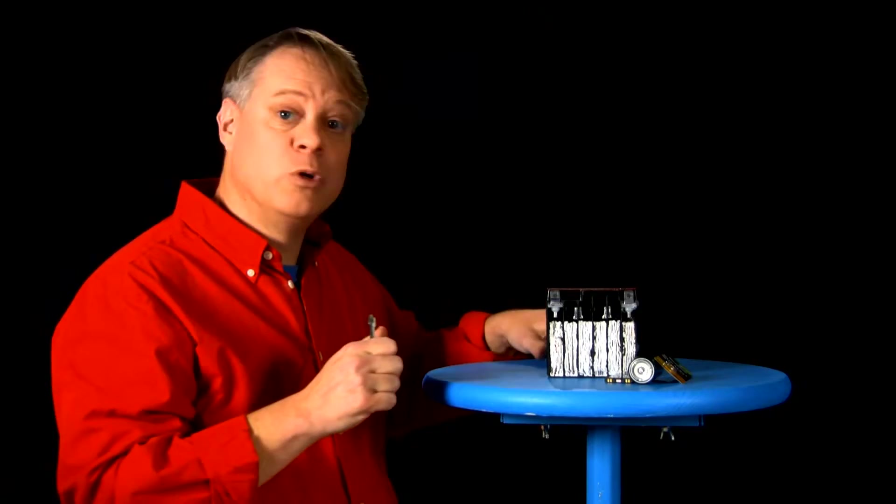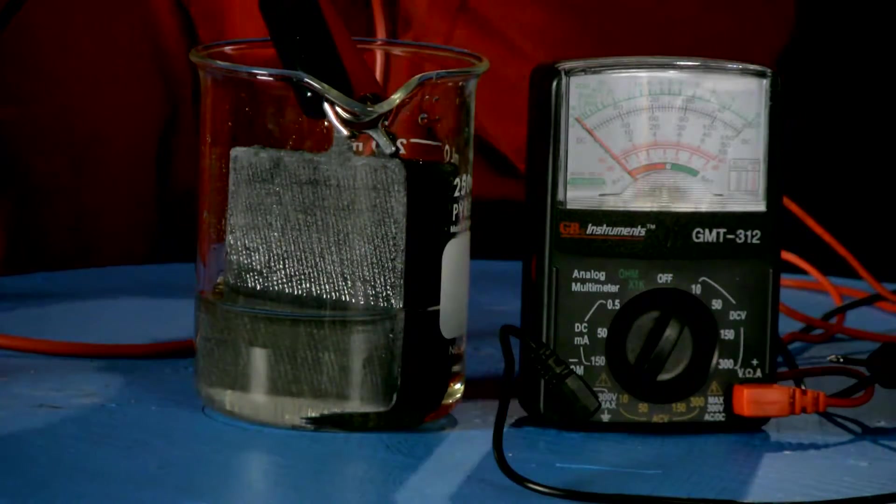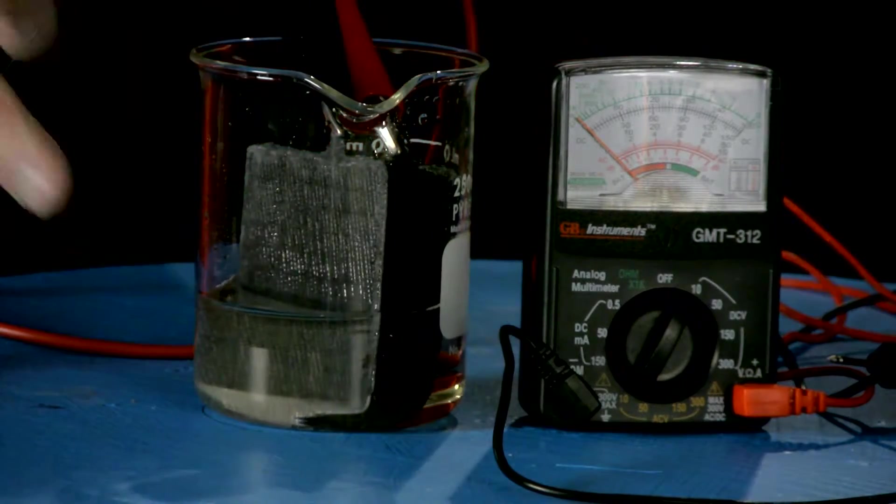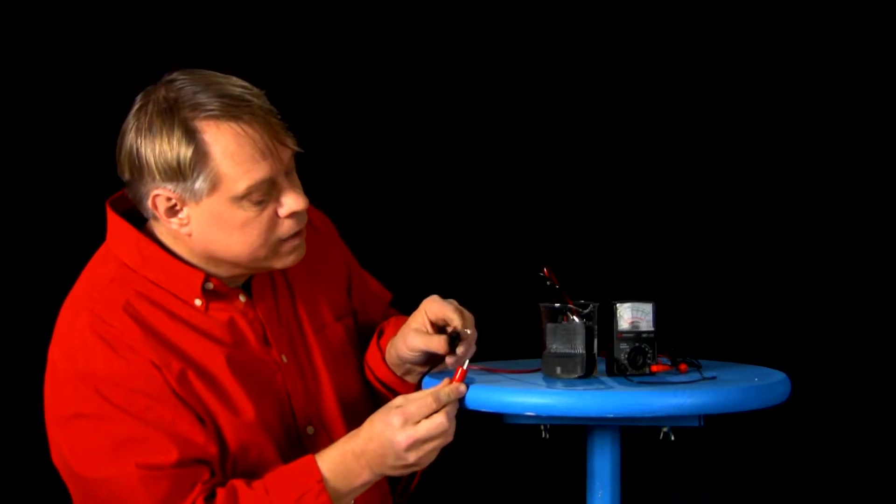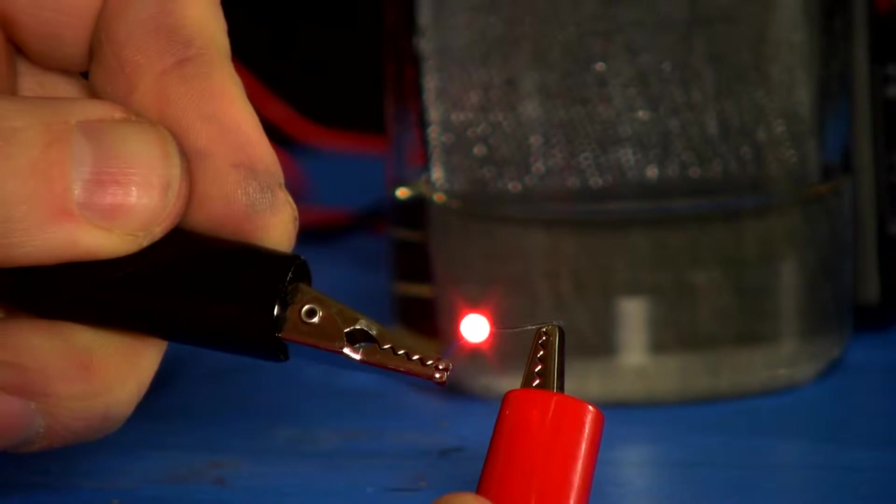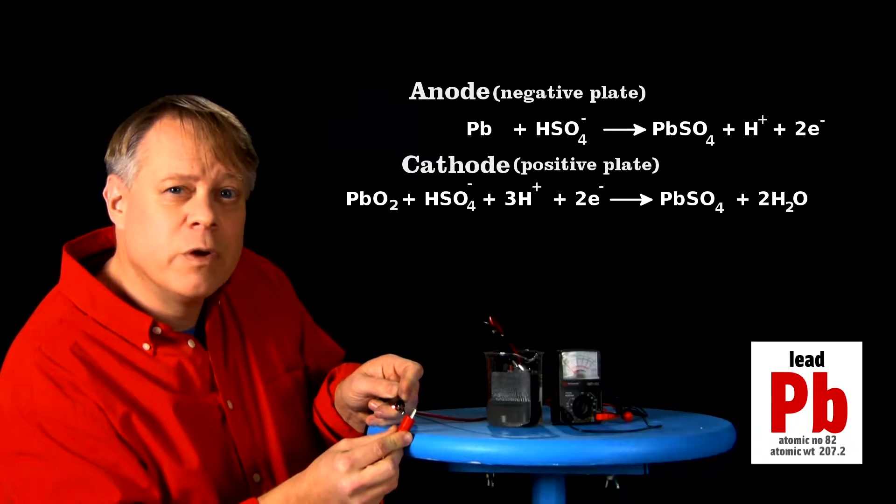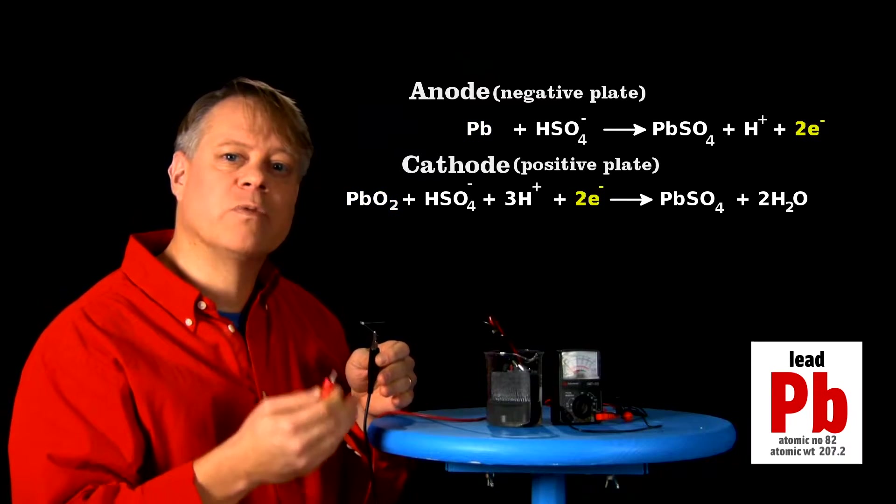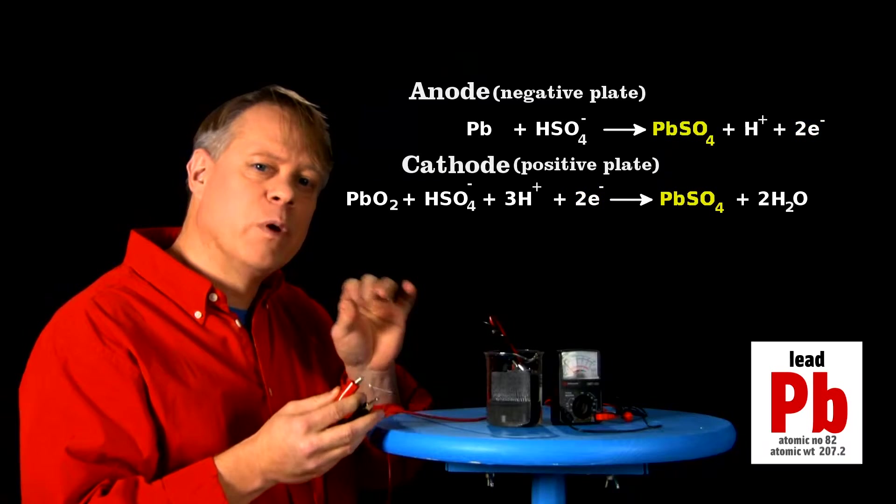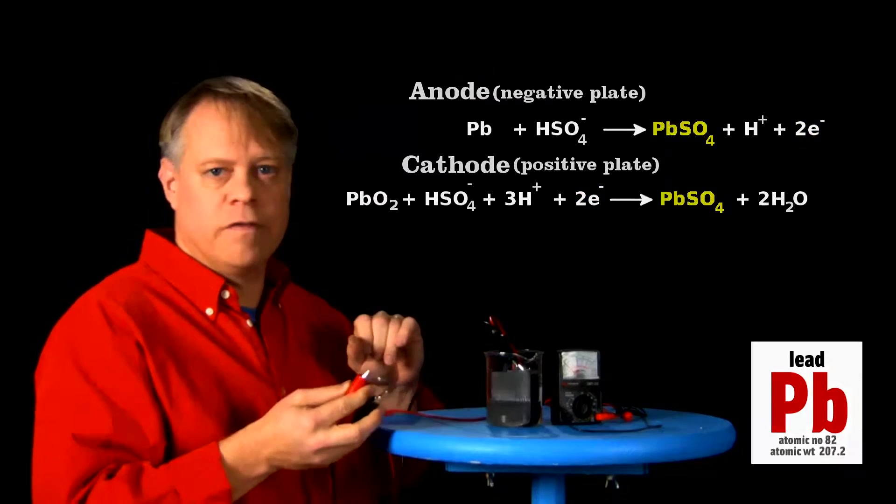So let me show you how they store electricity using just two plates. So I have here a lead plate and a lead oxide plate from the battery, and the sulfuric acid, and now watch what happens when I connect the leads. The LED lights up. A current flows from the lead oxide cathode to the lead anode. The lead gives up electrons, which the lead oxide accepts. This exchange turns both plates into solid lead sulfate.